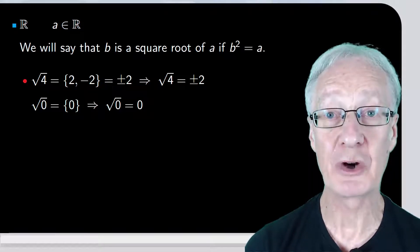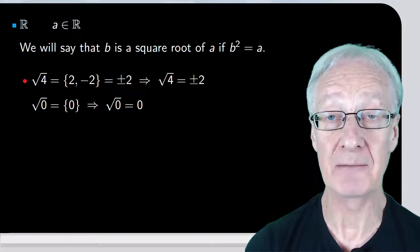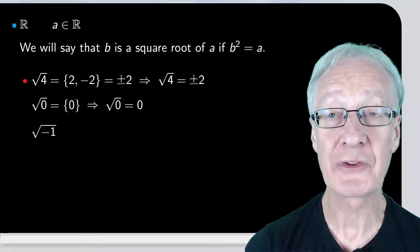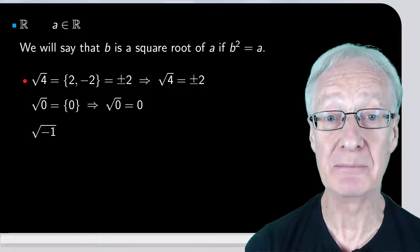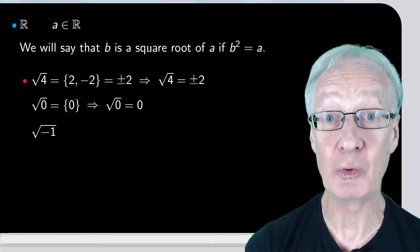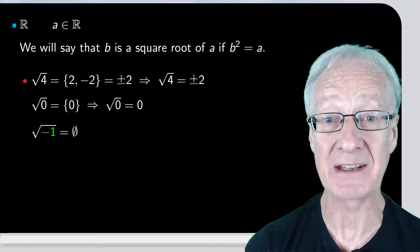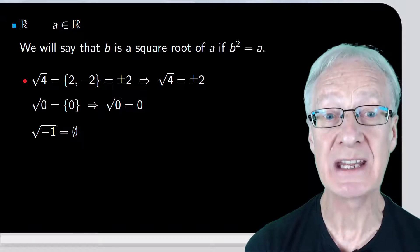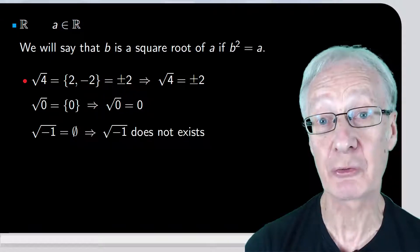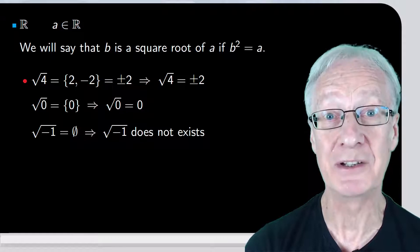Finally, what about the square root of a negative number, say minus 1? We've said that we're only working with real numbers. So, the answer to what real number, when squared, gives us minus 1 is the empty set. For simplicity, we usually just say that the square root of minus 1 doesn't exist.